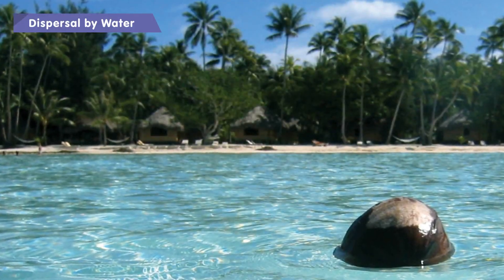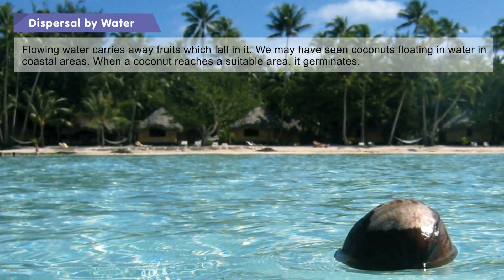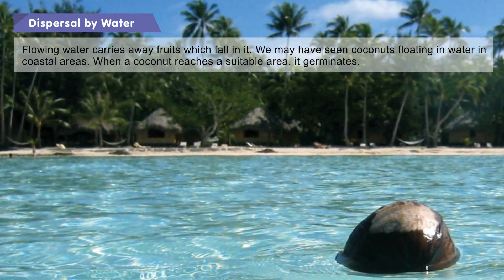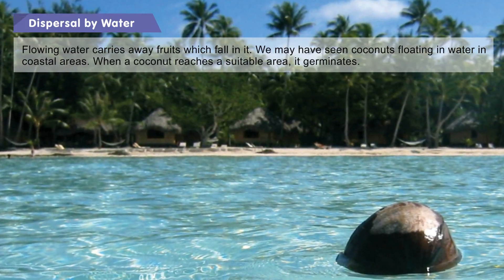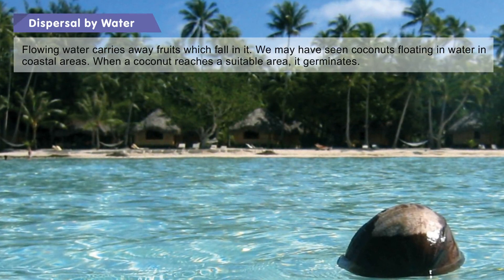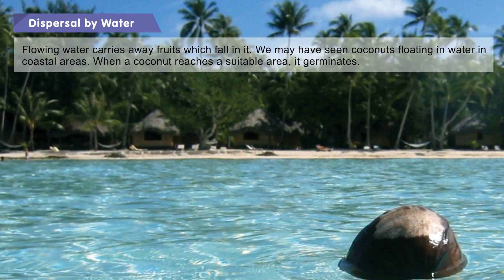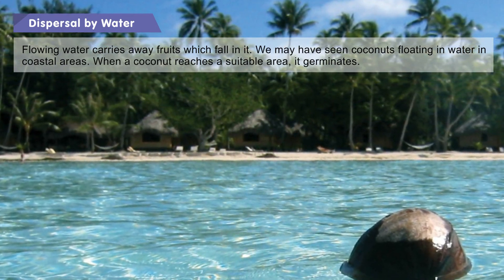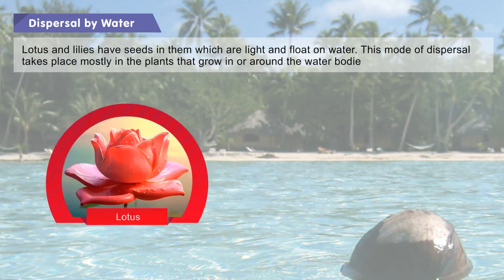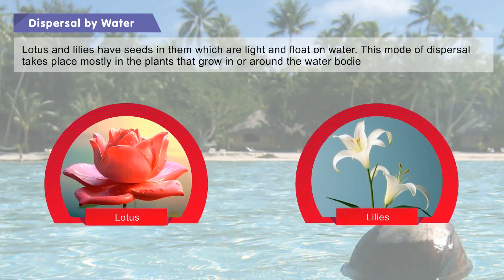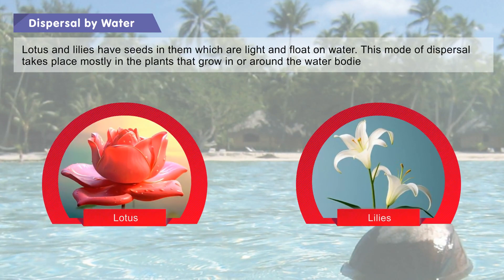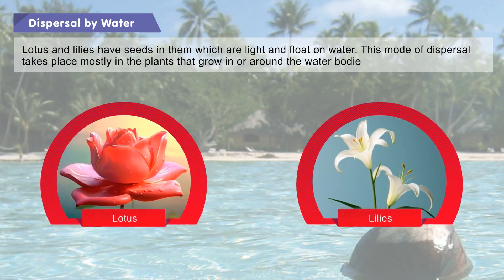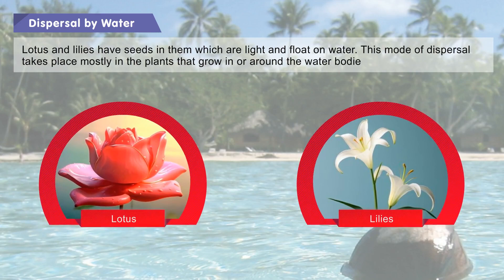Dispersal by water: Flowing water carries away fruits which fall in it. We may have seen coconuts floating in water in coastal areas. When a coconut reaches a suitable area, it germinates. Lotus and lilies have seeds which are light and float on water. This mode of dispersal takes place mostly in plants that grow in or around water bodies.